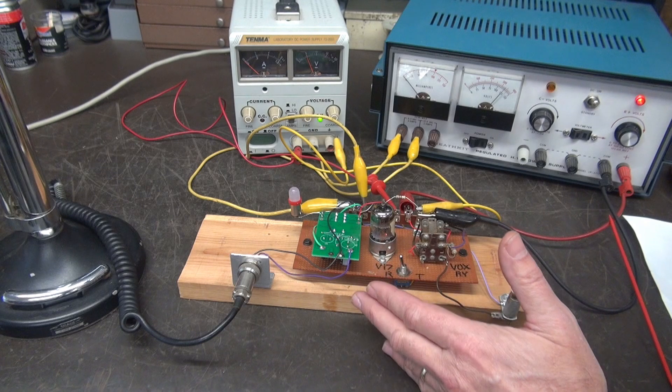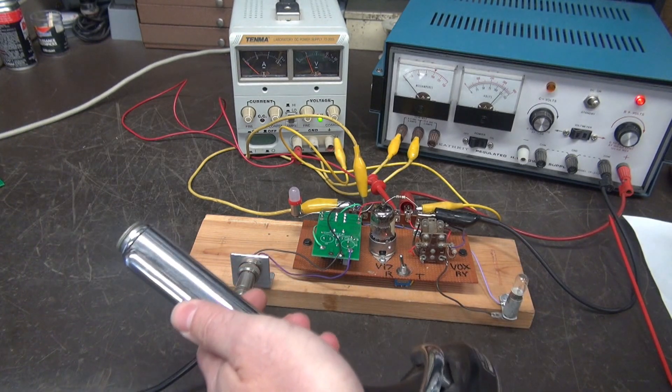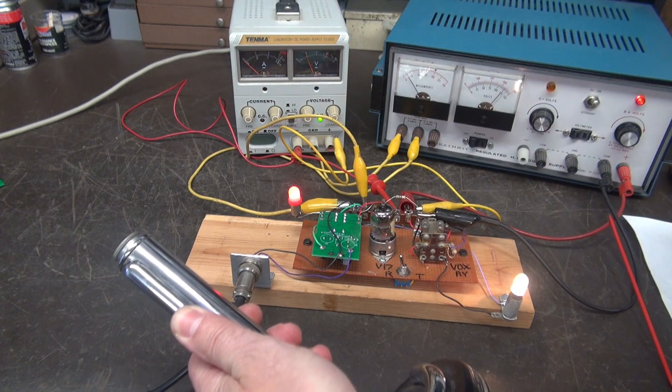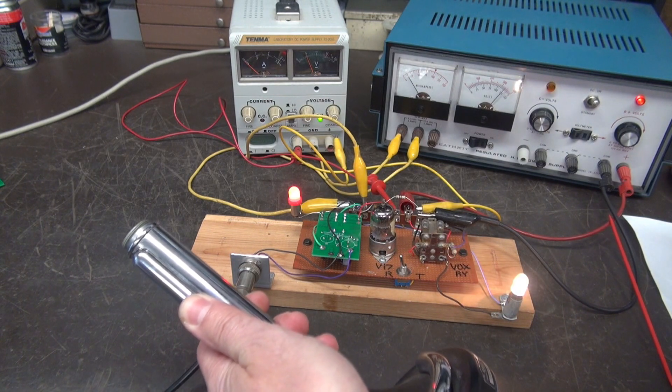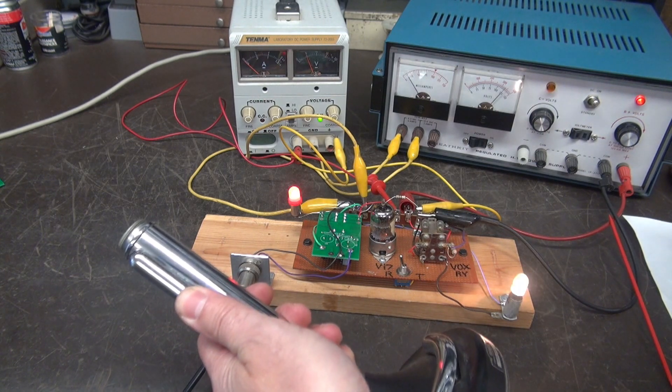Okay, now if I were to take my microphone and key it, the K1 pulls in and also keys the transmitter. It actually works in parallel with the 12AT7.